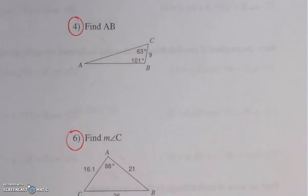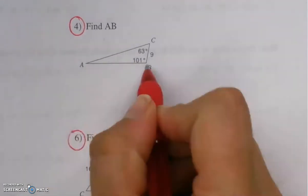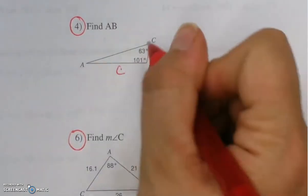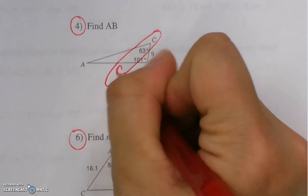Number 4, find AB. So if we're finding side AB, side AB is across from angle C, so we're going to call it side C. So 63 degrees is across from side C.